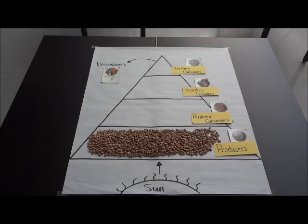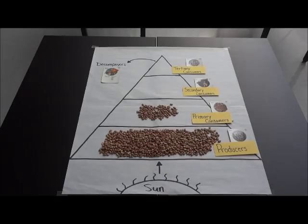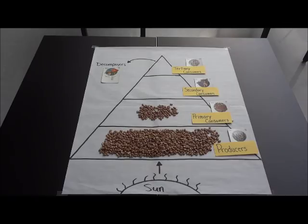Since the primary consumers eat the producers, they are going to gain energy from the producers. So that means that we have to move beans up to the next level to show the transfer of energy. The primary consumers are going to gain 10% of energy from the producers, so we are going to move 100 pinto beans up to the primary consumer level. I have moved 100 pinto beans from our producer level to our primary consumer level, showing how much energy has been transferred after they were consumed. Make sure you notice the big difference between the amount of pinto beans in our producer level compared to our primary consumer level.